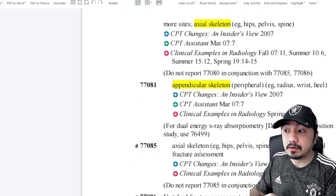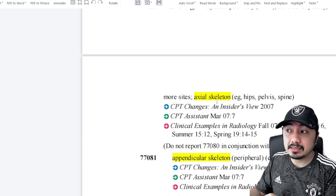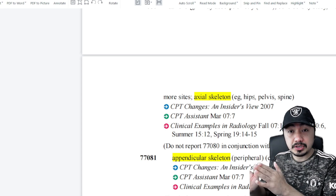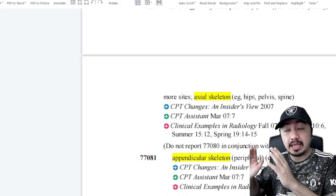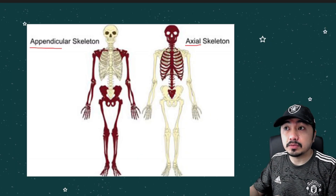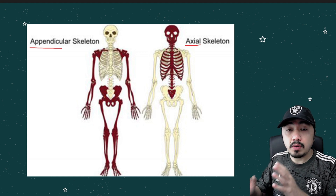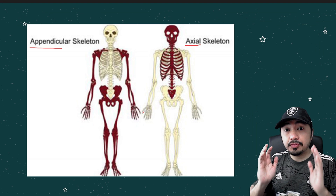We also have code 77085. For the axial skeleton code, hips and pelvis are included — make sure to check that section to confirm hips and pelvis are located in the axial skeleton. As for the appendicular skeleton, it includes the extremities, or the peripheral bones.